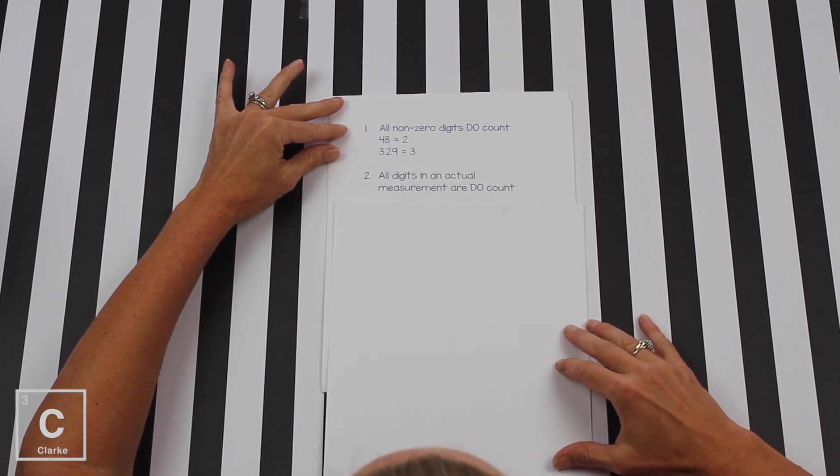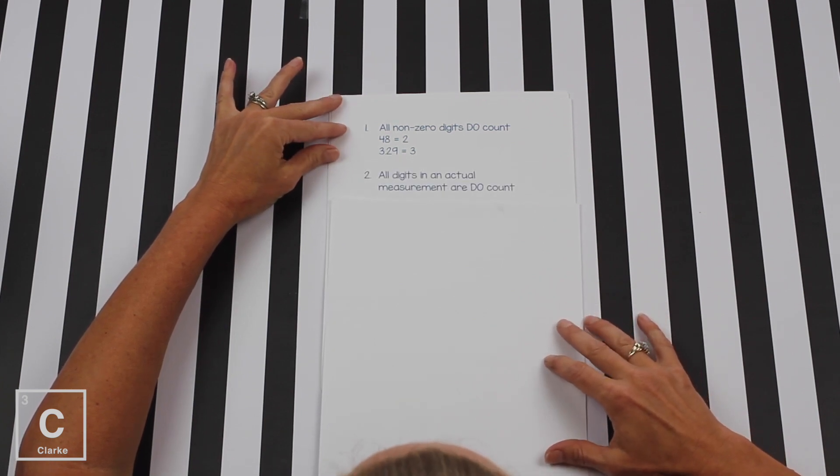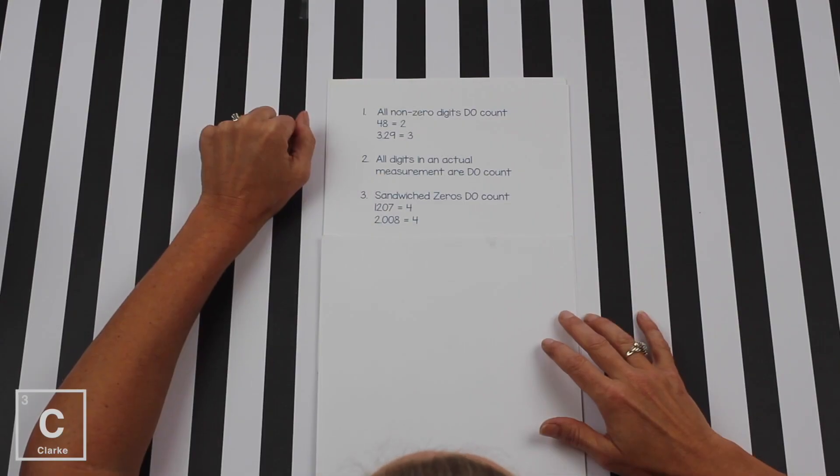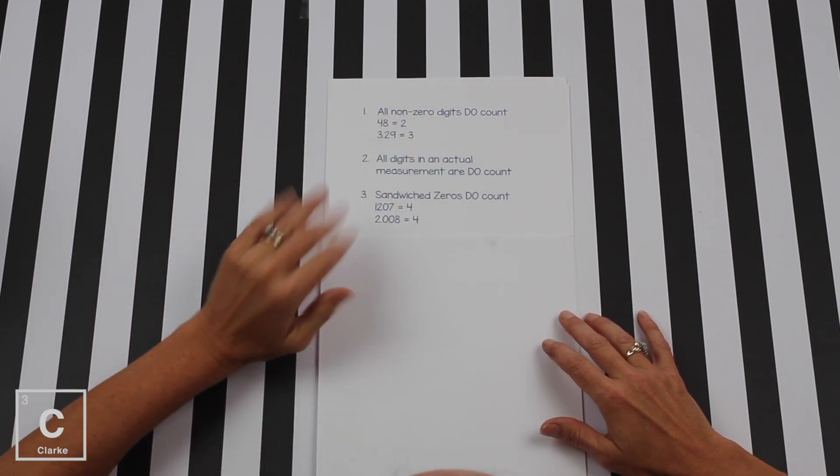The second rule, all digits in an actual measurement do count. That just means if you're in the lab and you measure whatever you're measuring and you write that number down, every single digit in that measurement is considered significant. Zeros, they're kind of a challenge. Do they count? Do they not count? These next three rules deal with nothing but zeros.